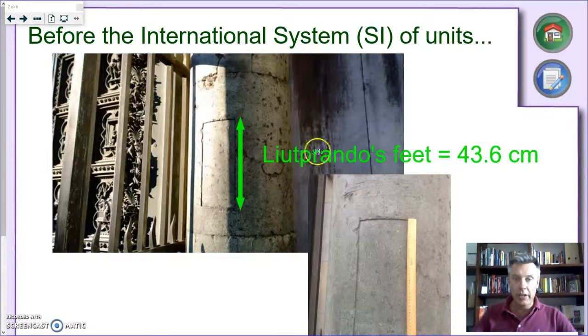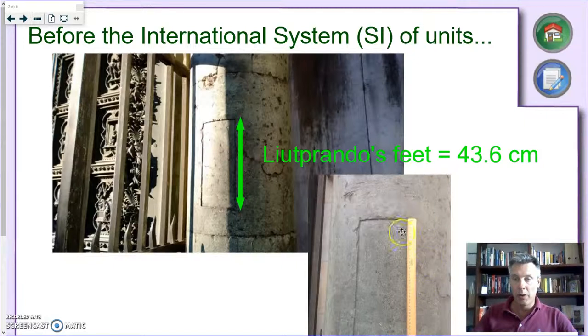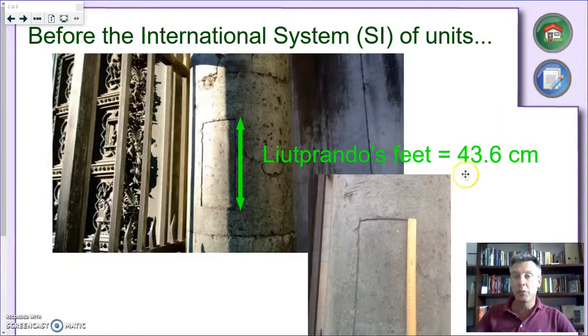Liutprando was a king of Italy back in the Dark Ages, he was from the Longobards, and as any good king should do, he established a common set of units for length using a model of his foot. They measured it, and then they sent these slabs of stone around the kingdom, especially in very crowded places, in places where people could meet and see those units. I went there a few times ago, and I measured myself. I measured the height of this rectangle, and it came out to be 43.6 centimeters.